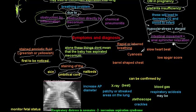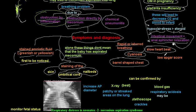You may also see cyanosis in severe cases, slow heartbeat, and a barrel-shaped chest. A low Apgar score is another indicator — the Apgar score assesses breathing, heart rate, color, muscle tone, and reflexes. I will include a video about Apgar score at the end of this video.